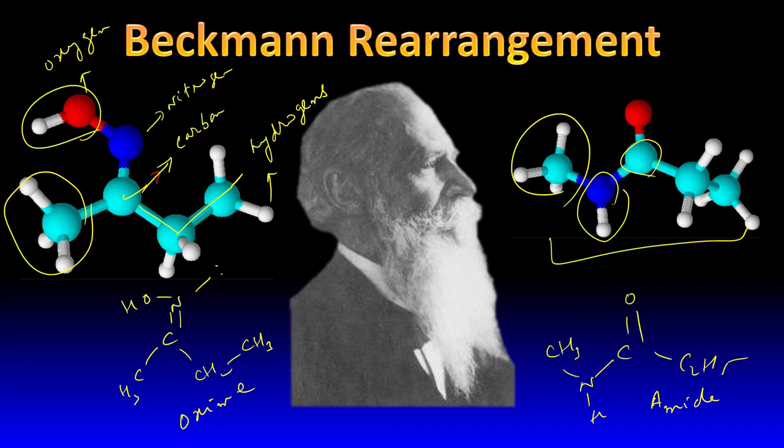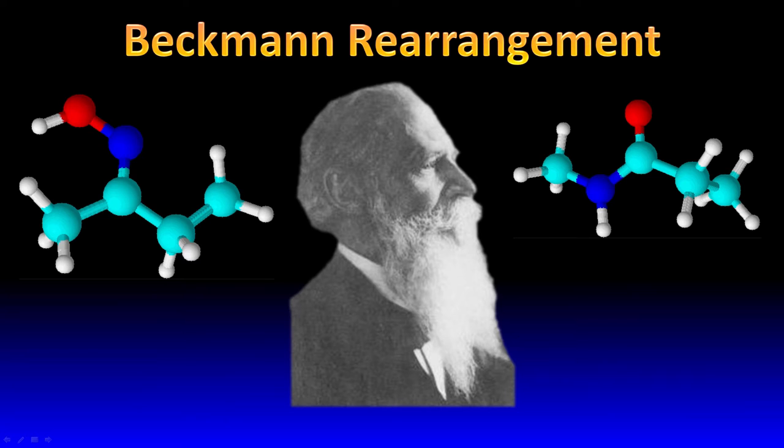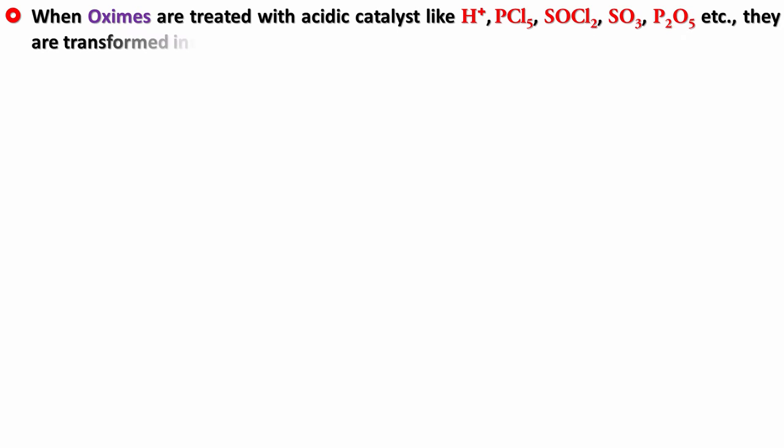Basically what happens in this reaction is that an oxime becomes an amide, and that is a rearrangement because they are functional isomers. When oximes are treated with acidic catalysts like H+, PCl5, SOCl2, SO3, P2O5, etc., they are transformed into amides — that may be substituted, which you'll understand once I explain the reaction.